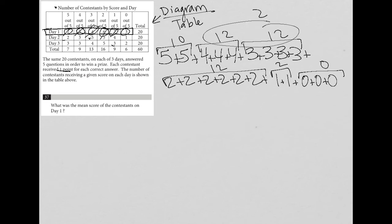12 plus 12 is 24. 24 plus 10, so those two, I get 34. 34 plus 12 is equal to 46. And then plus the two here is equal to 48. And 48 plus zero is just still 48. And we should have 20 contestants. Let me just make sure I did that correctly.